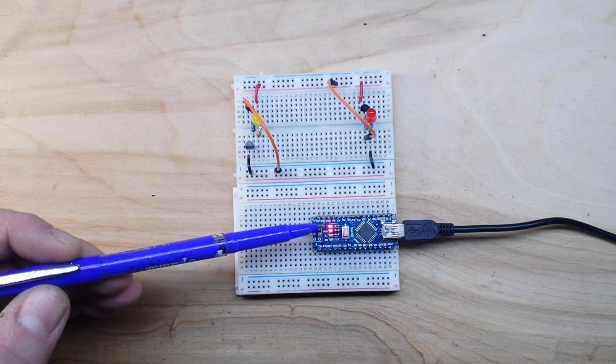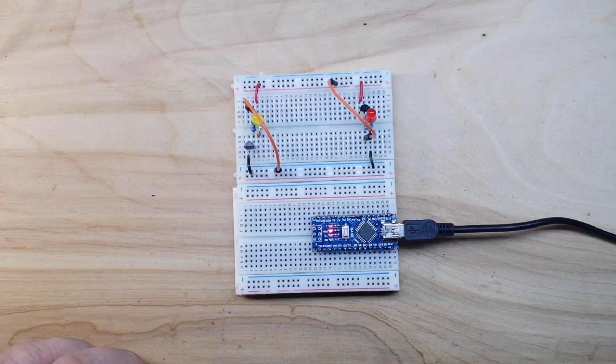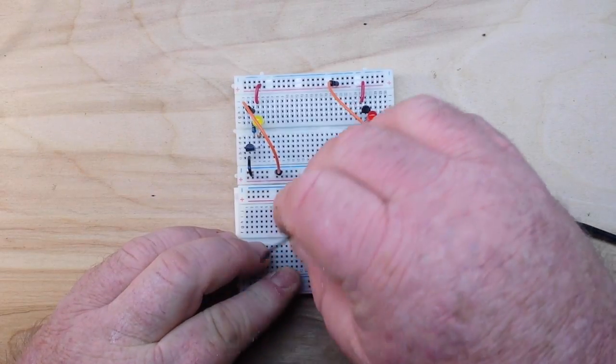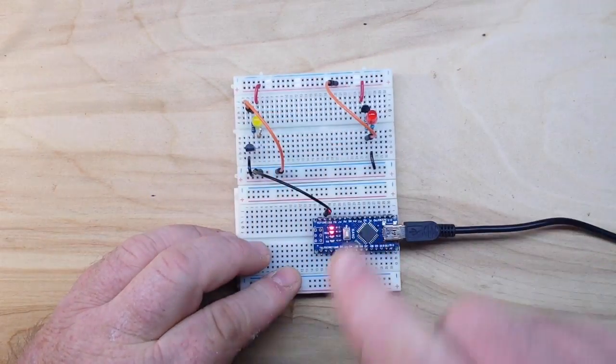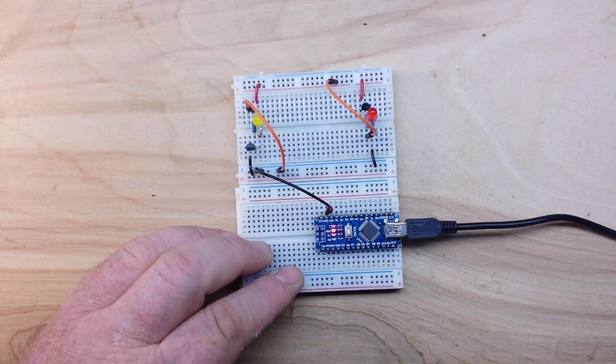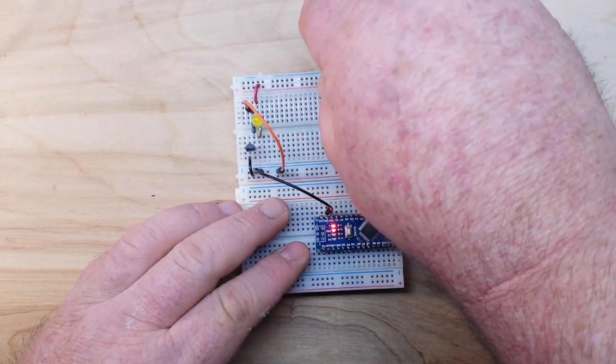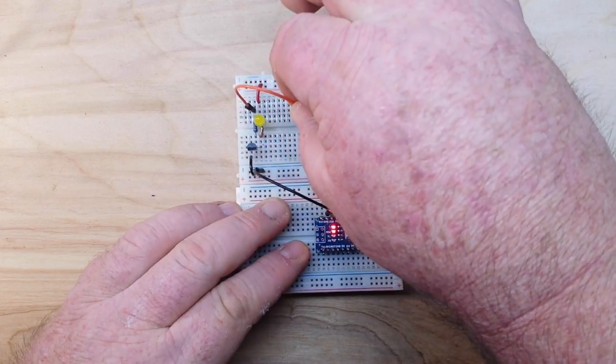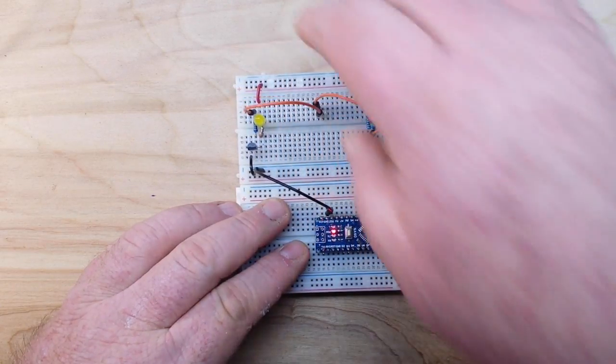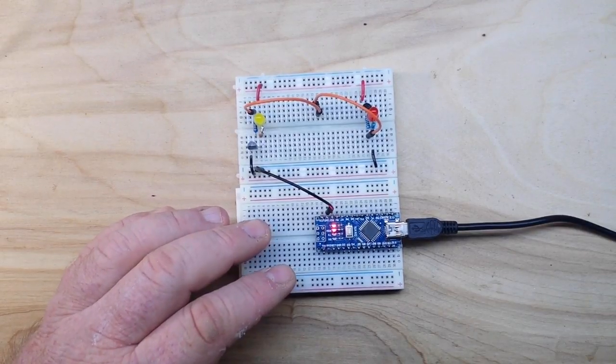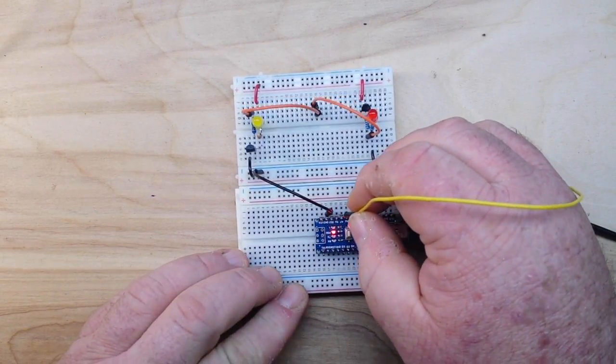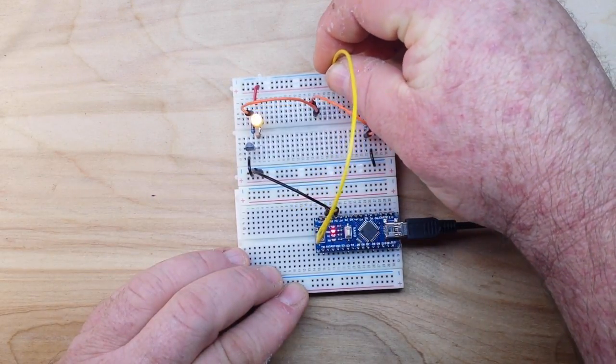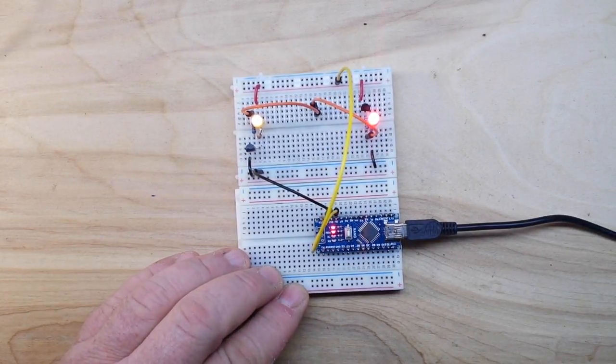So let's start by connecting our grounds together - we always need a common ground. Next, let's take our bases and common them together. And then we will take 5 volts from the Arduino and put it to the VCC rail. Now look what's happened here - both LEDs are lit.